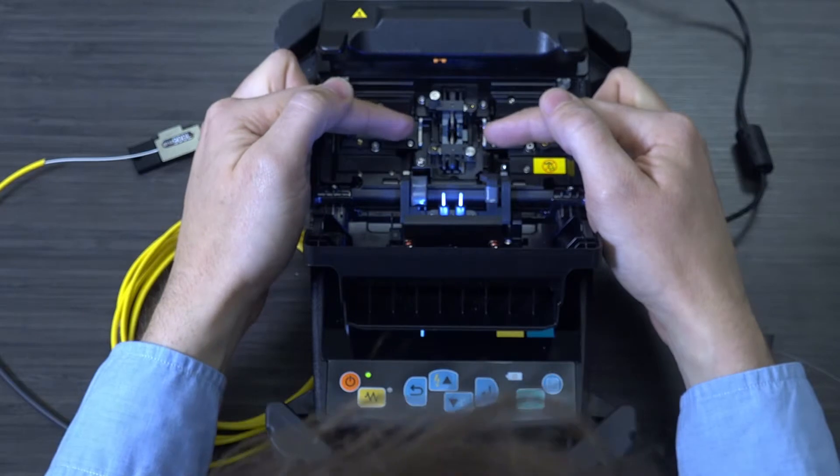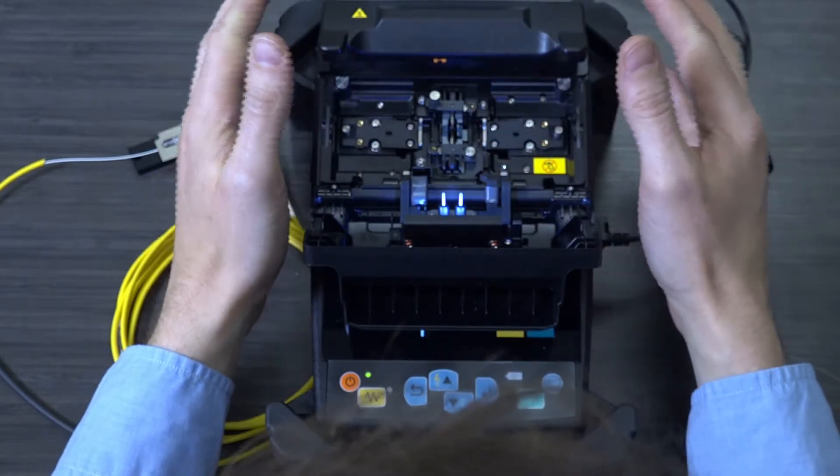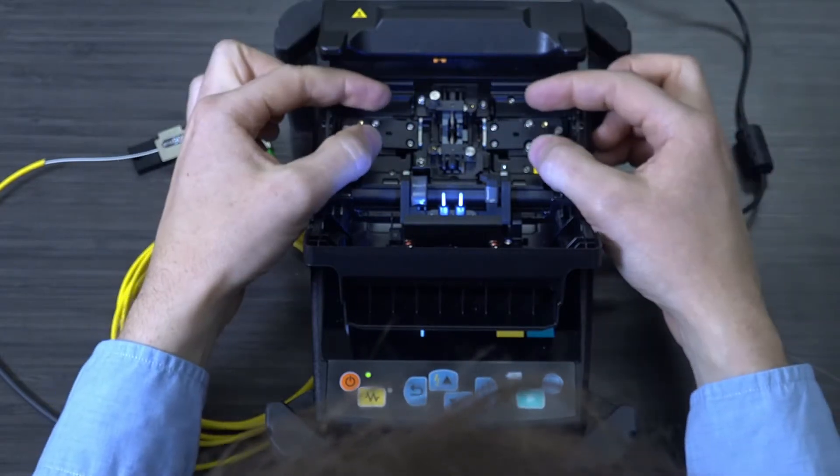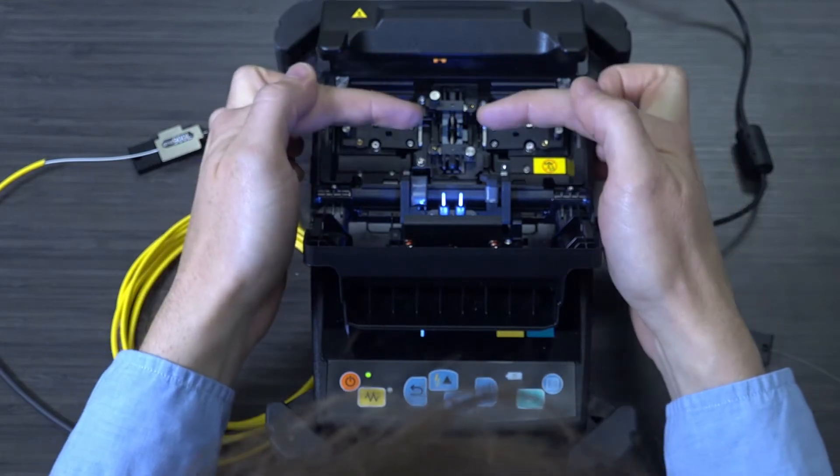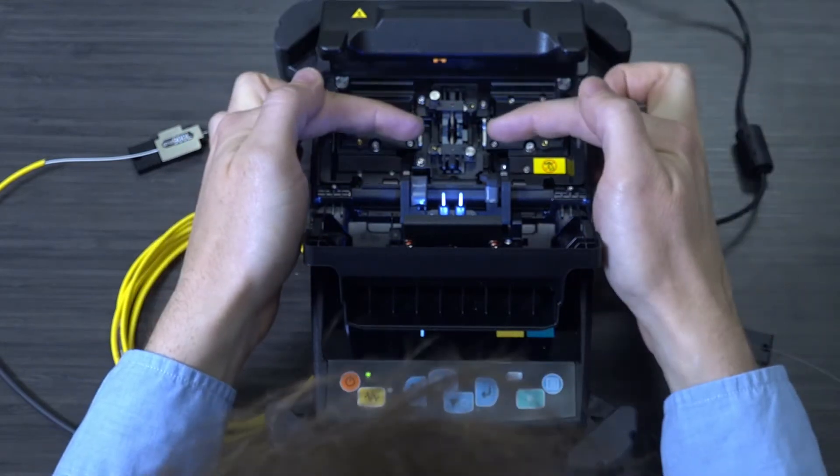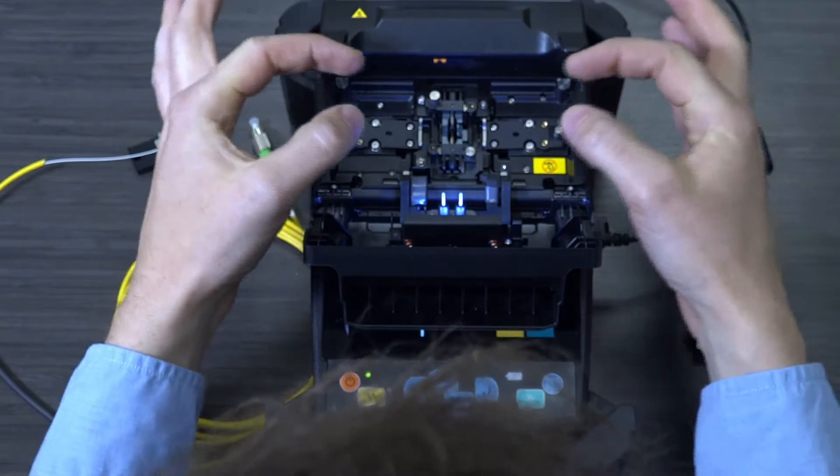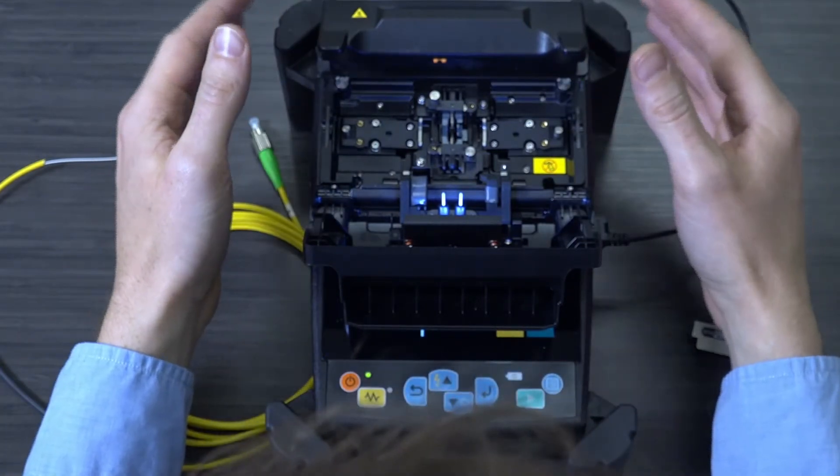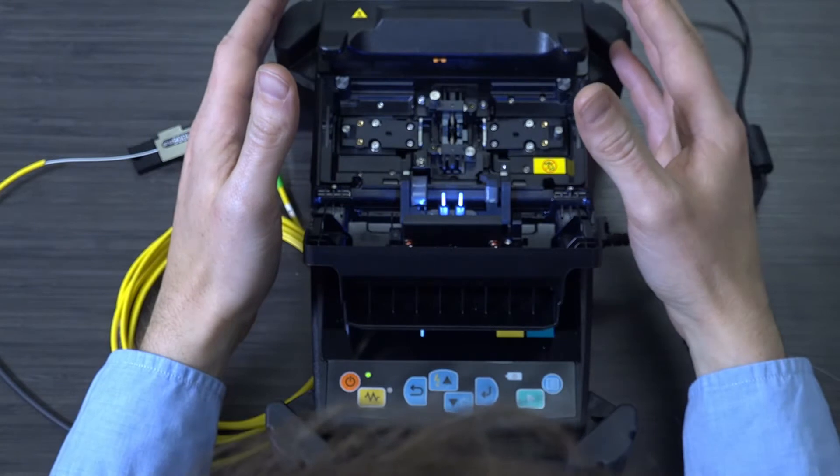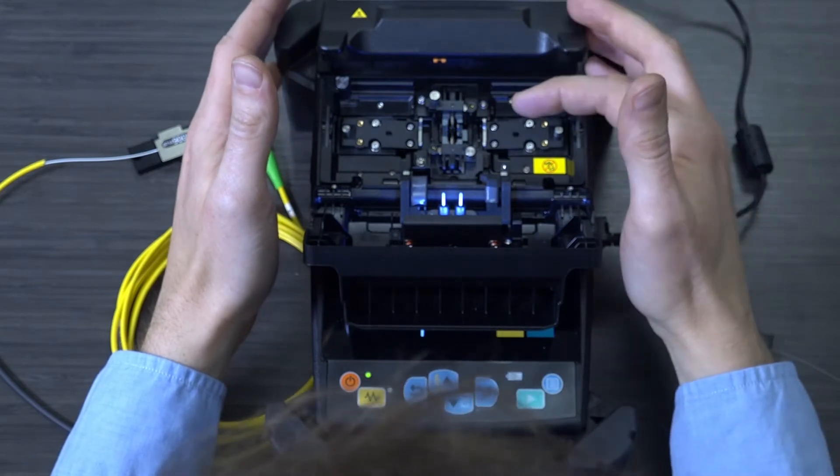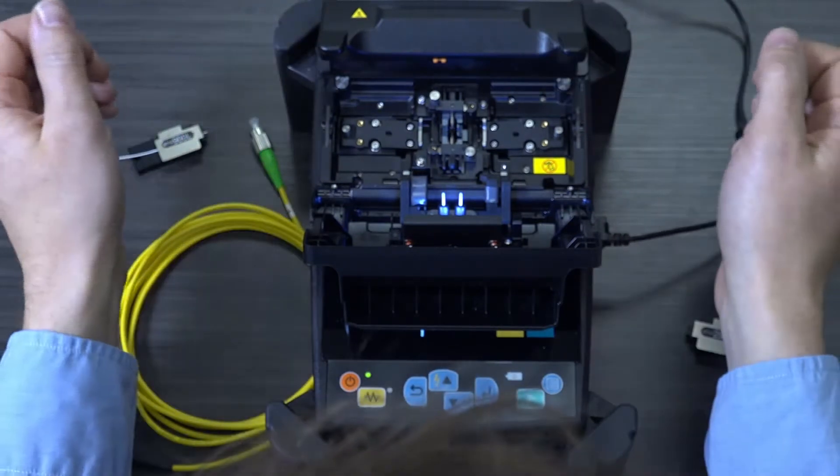So what this device will do is we will place everything in here. We will make sure the fibers are not spanning or crossing those two electrodes. They need to stay on their own sides when they're first placed. We will close this lid. The splicer will bring them together, automatically align them, and it will use these two electrodes to actually fuse the two fibers together.